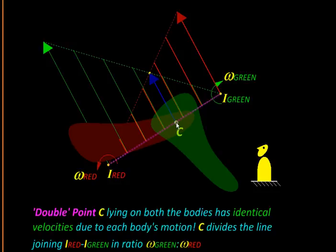In fact, we can drive a nail through this common point C passing through both the bodies, and at least for a moment it will not be torn apart because at that point both the bodies are moving in the same direction with the same speed. This is what an observer external to both the bodies would see.